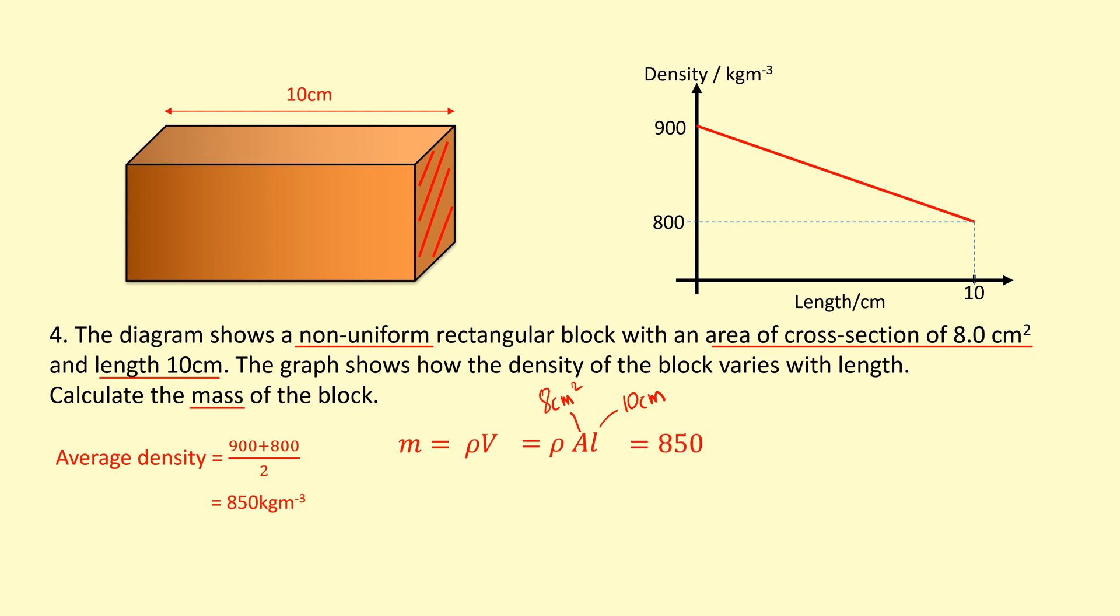So I'm going to use that as a density, and convert the centimeters squared into meters squared by dividing by 100 twice. So 100 squared there for each centimeter unit there. And then turn the 10 centimeters length into meters as well, divided by 100. And that gives me a mass of 0.068 kilograms.